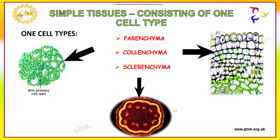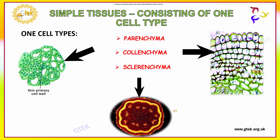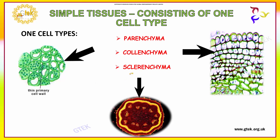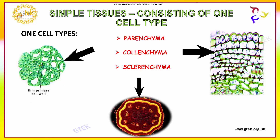Now we are going to see about simple tissues. Simple tissue consists of one cell type, which is divided into three types: parenchyma, collenchyma, and sclerenchyma. You can see here the parenchyma, which consists of thin primary cell walls, along with collenchyma and sclerenchyma.